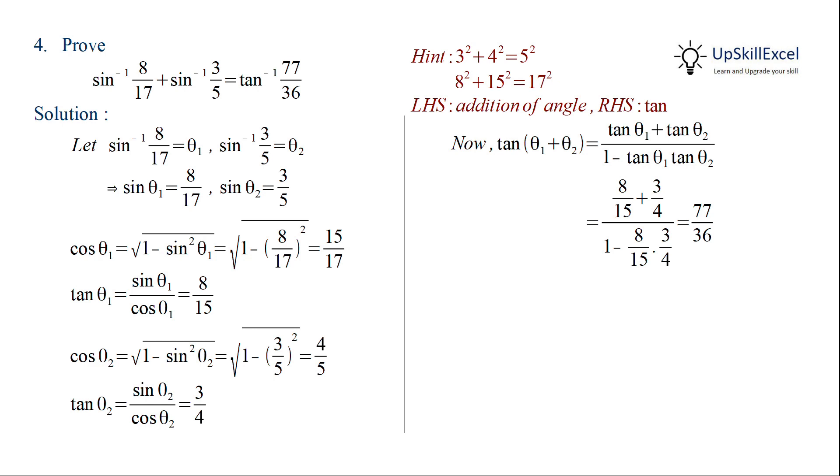Now we can take tan inverse on both sides, giving us tan inverse 77 by 36 is equal to theta 1 plus theta 2. We can substitute theta 1 and theta 2 from our assumption to get tan inverse 77 by 36 is equal to sin inverse of 8 by 17 plus sin inverse of 3 by 5.